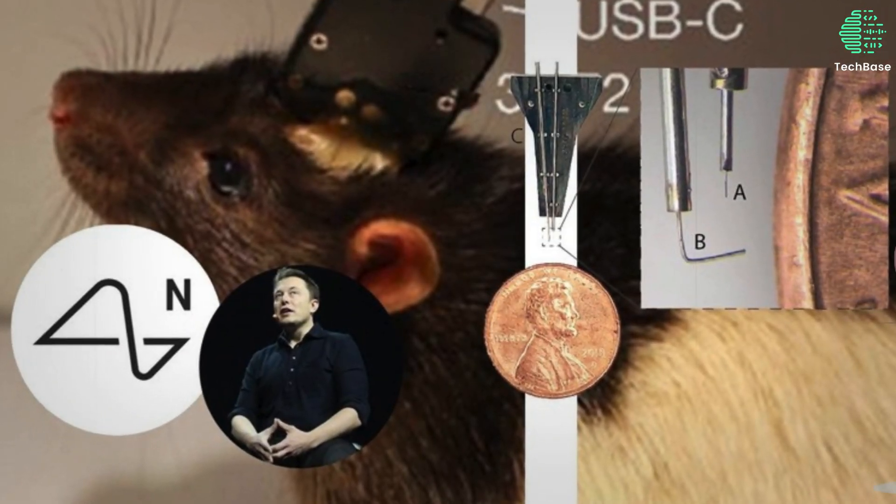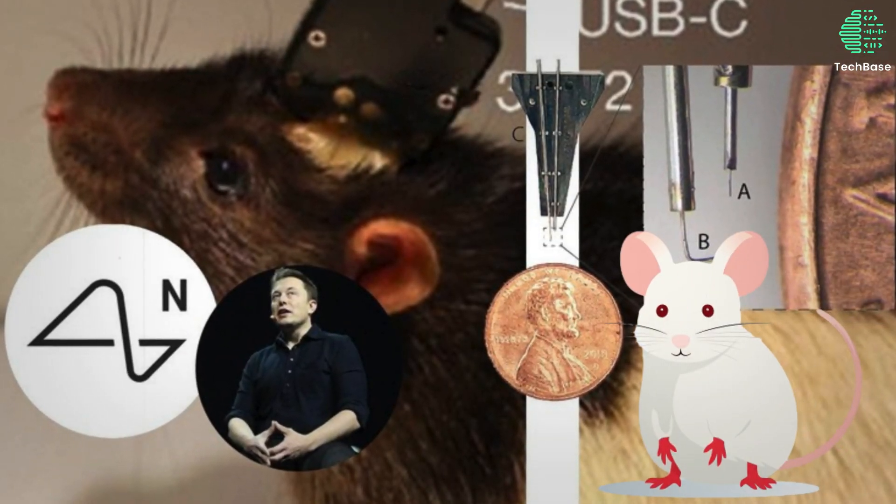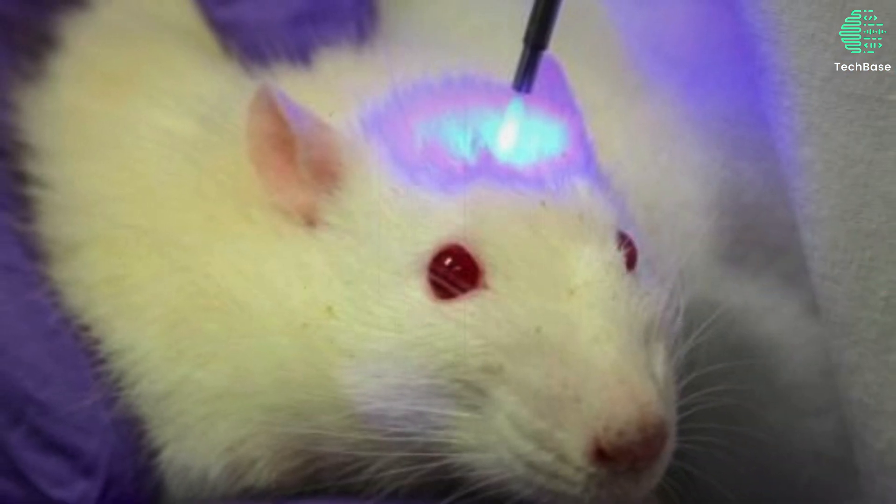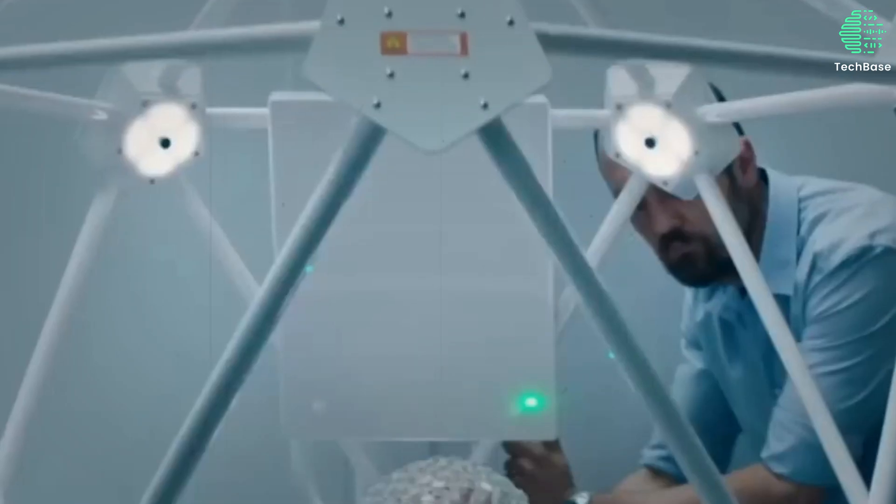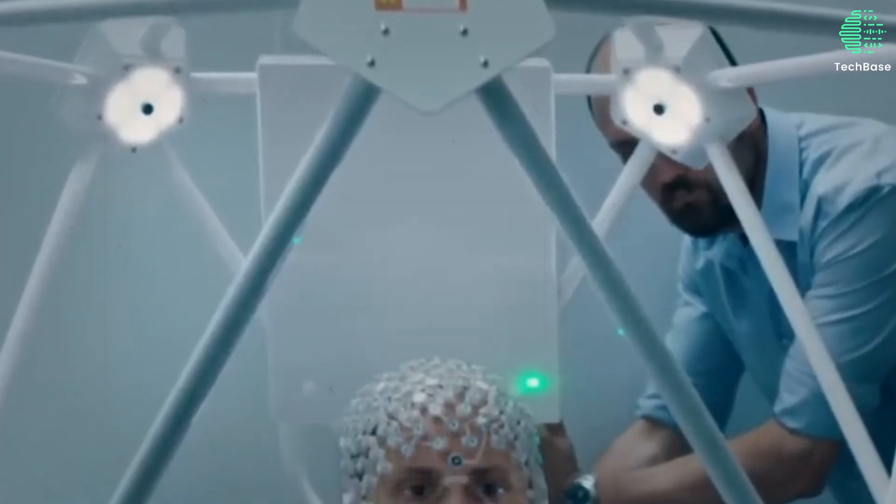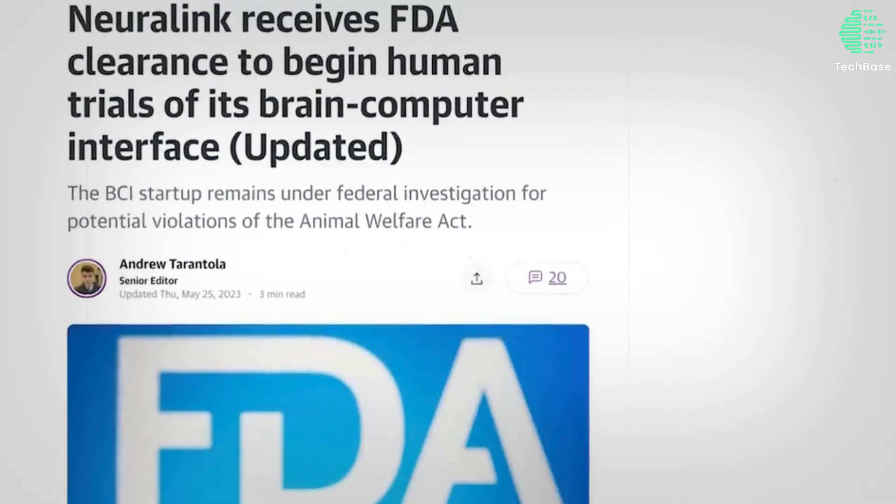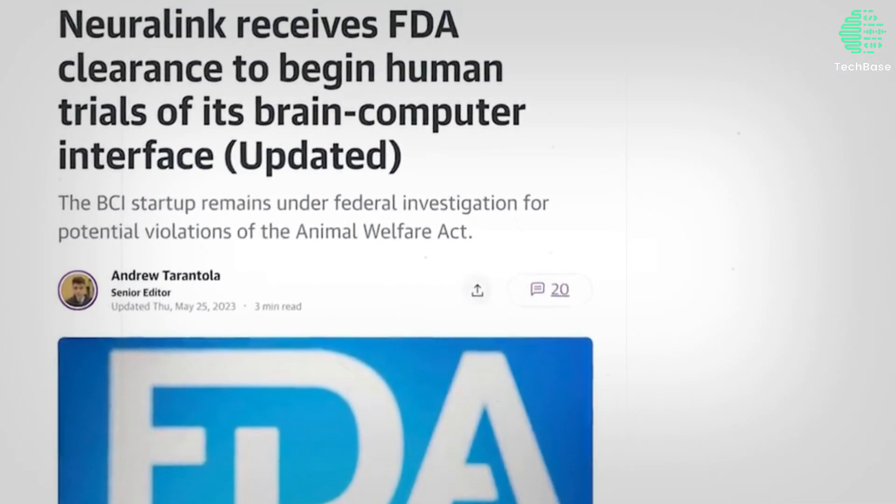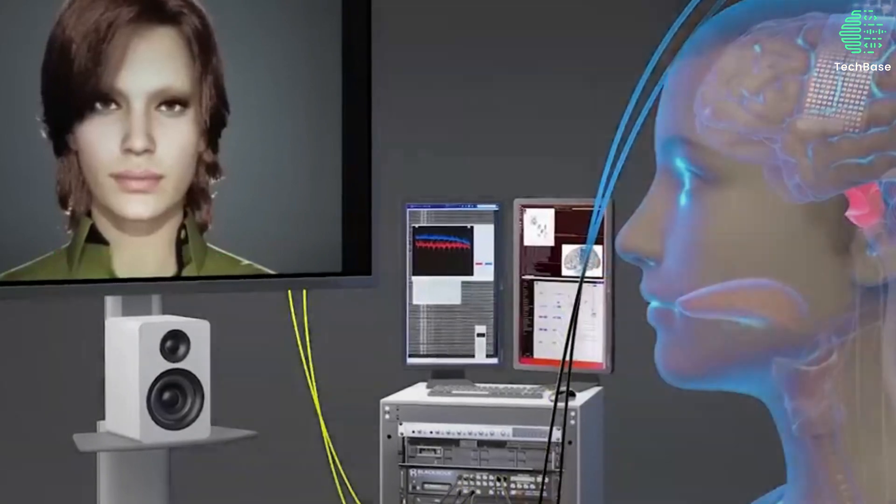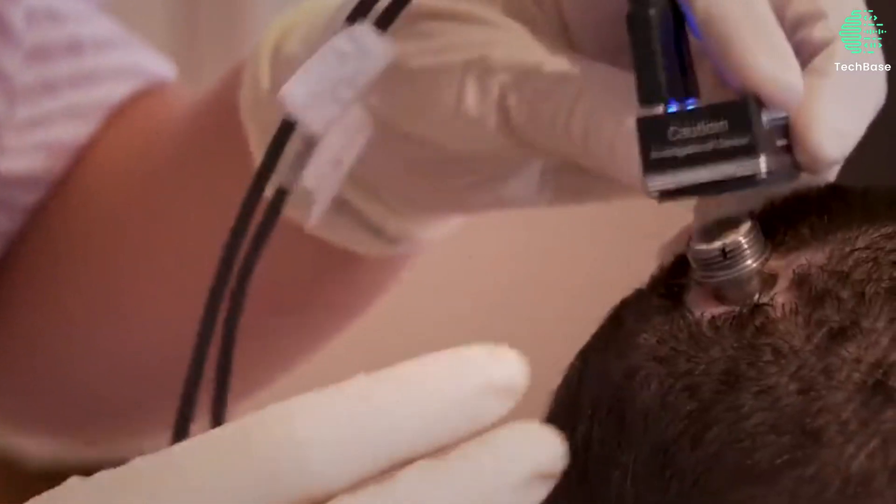Neuralink unveiled a system capable of reading information from lab rats via an impressive array of 1,500 electrodes. Despite initial projections for human trials in 2020, Neuralink encountered delays in its timeline. However, by May 2023, the company achieved a significant milestone when it received approval for human trials in the United States. This regulatory green light marked a pivotal moment in Neuralink's journey, setting the stage for groundbreaking advancements in neurotechnology.